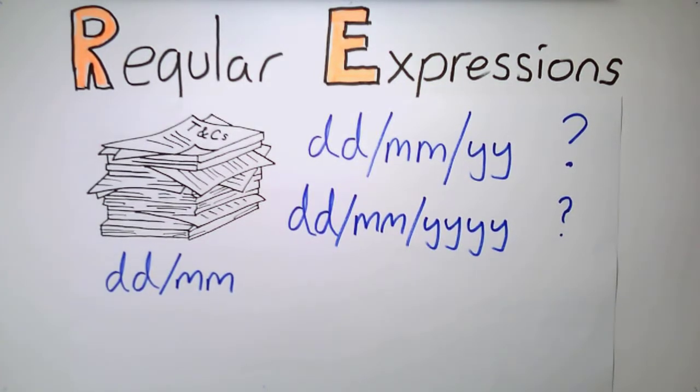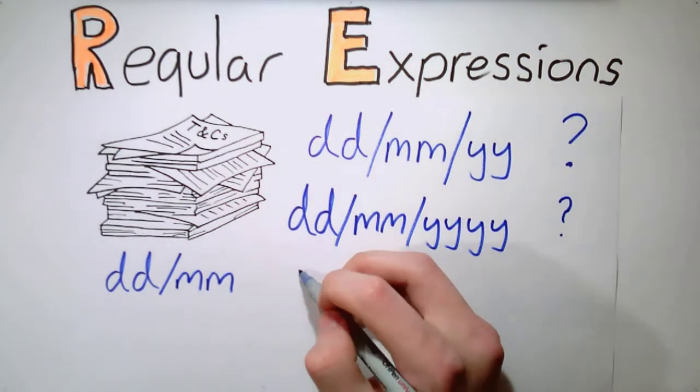But the first month digit can only be 0 or 1, and the first day digit can only be 0 to 3. Sometimes people ignore the 0 if the date is only one digit, so it could just be d/m.